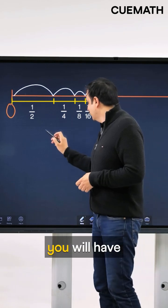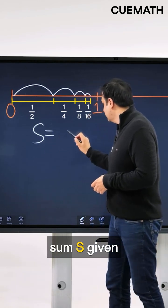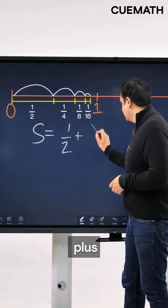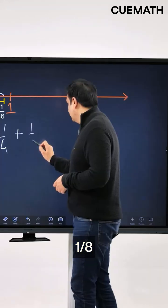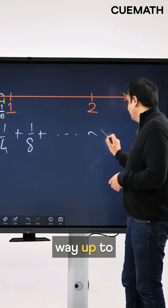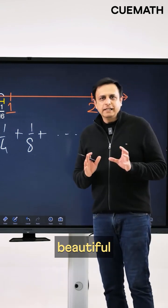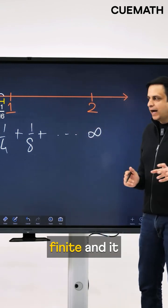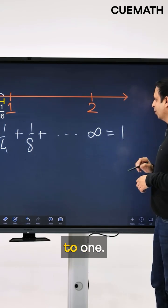Well, to find your final position, you will have to find this sum s given by 1 over 2 plus 1 over 4 plus 1 over 8 plus 1 over 16 all the way up to infinity. And the beautiful thing is that this sum is finite and it is exactly equal to 1.